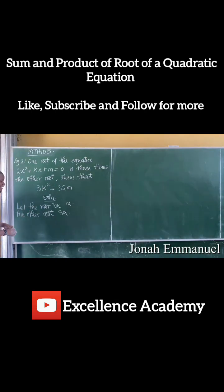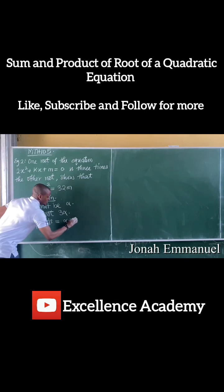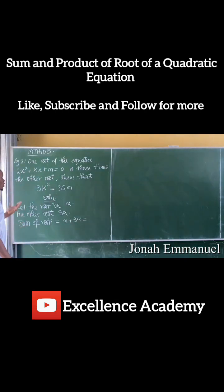All right, so in this case now, let's get sum and product of roots. Sum of roots is equal to—sum these two—I have alpha plus three alpha, which is equal to minus B over A.